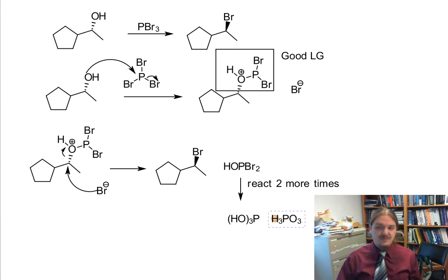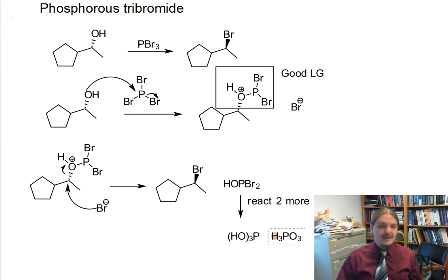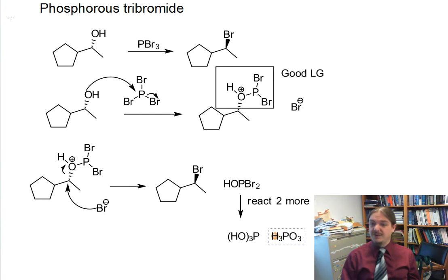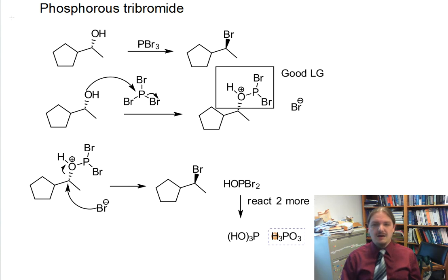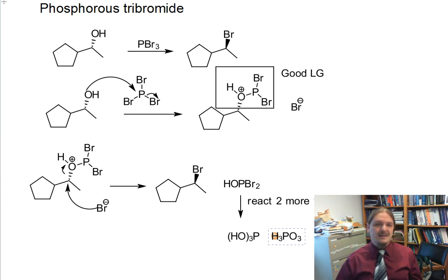This reaction works really well. It works for primary and secondary alcohols, converting them into alkyl halides through an SN2 type of process. In the next video, we're going to talk about the Appel reaction, which is a variation of this reaction that gives us access to iodine, and also avoids handling PBr3 and thionyl chloride from the previous video, as both of those reagents are caustic liquids you wouldn't want to handle. Thank you for watching.